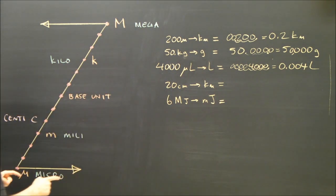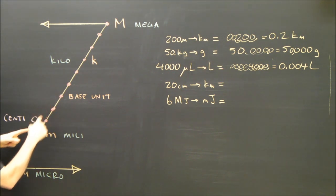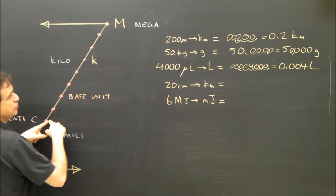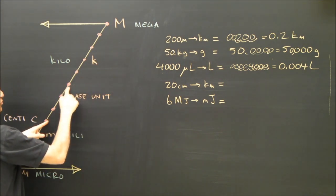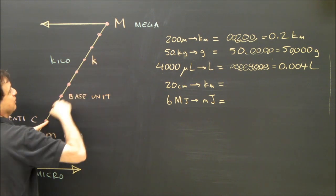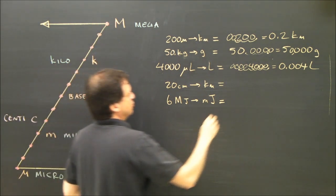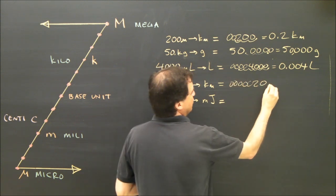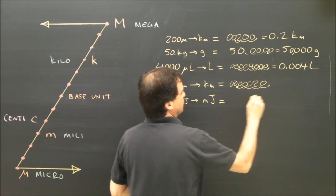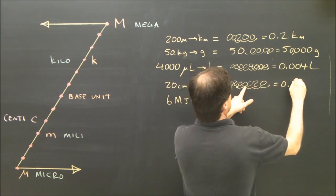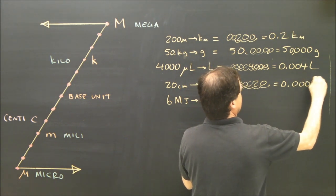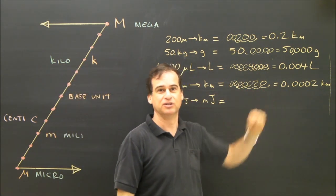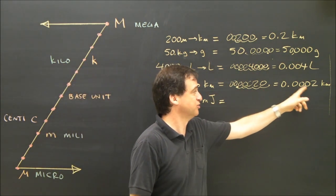Let's try centimeters to kilometers. Centi is the prefix that doesn't go by threes, but let's do it anyway. From centi to kilo going up is five steps, so the decimal moves five places to the left. Starting with 20, moving five to the left gives 0.00020 — so 20 centimeters is 0.0002 kilometers.